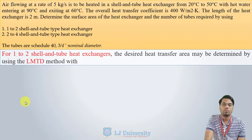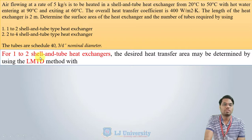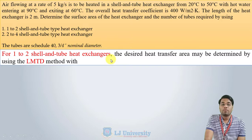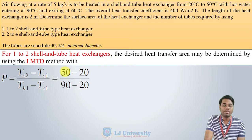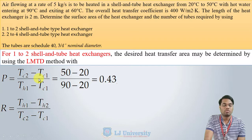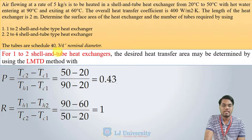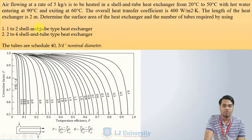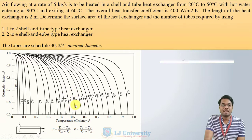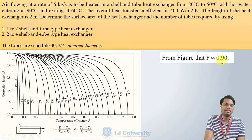For Case 1 — the 1-2 shell and tube heat exchanger — to find the required surface area A, we again need the correction factor F. Using all four temperature values, we calculate P = 0.43 and R = 1. From the appropriate graph for the 1-2 shell and tube heat exchanger, the correction factor F is approximately 0.9.